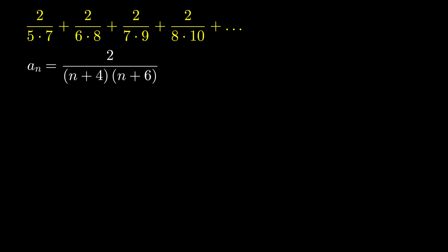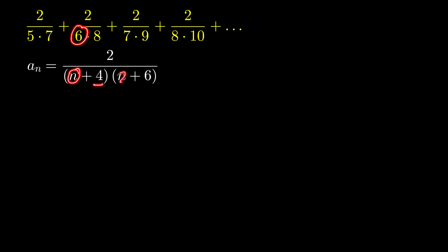So for example, if n is equal to 1, you have 2 over (1 plus 4), so that is 5, and then (1 plus 6), which is equal to 7. And if n is equal to 2, you'll get (2 plus 4), which is equal to 6, and then (2 plus 6), which is equal to 8. So this is indeed the formula for the nth term of this series.